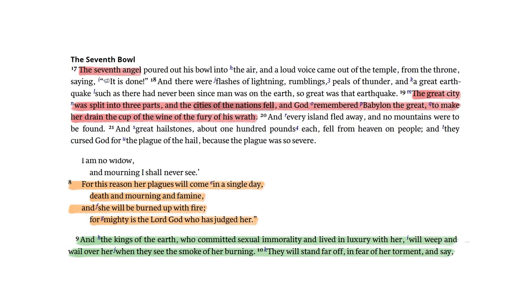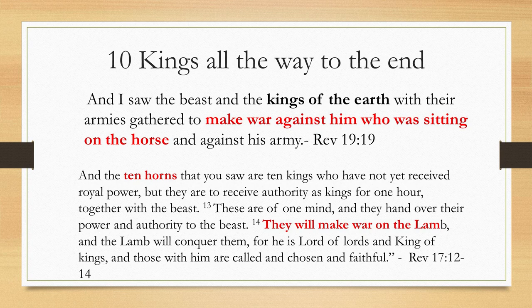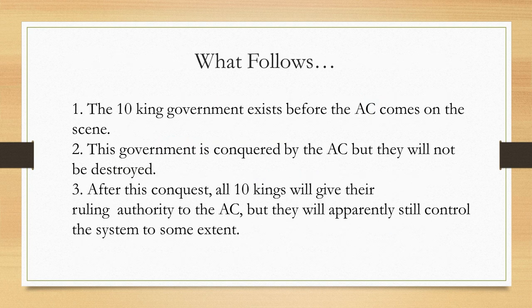Because the destruction of Mystery Babylon is one of the very last events in Revelation chronologically, we can be sure these ten kings exist right up to the end of the 70th week of Daniel. Given the reference to them going to war against the Lamb, I think it's a sure bet these are the same ten kings gathered at Armageddon in Revelation 19: 'And I saw the beast and the kings of the earth with their armies gathered to make war against him who was sitting on the horse.' So the ten kings in Daniel 7 are the same ones in Revelation 17, which means: the ten-king government exists before the Antichrist; this government is conquered by the Antichrist but not destroyed; and after conquest all ten kings give their ruling authority to him.